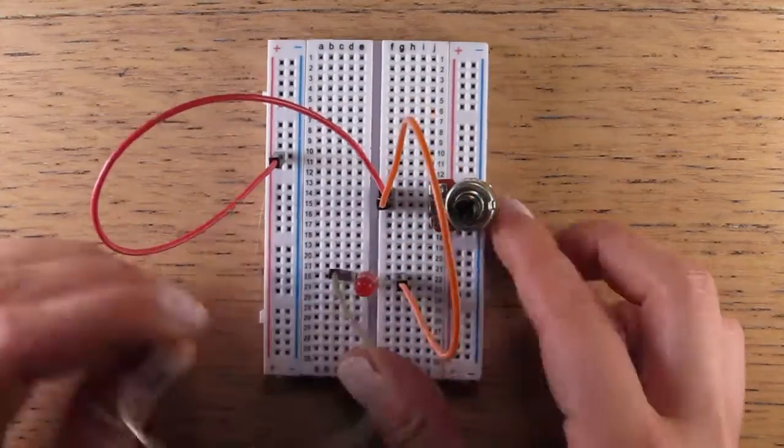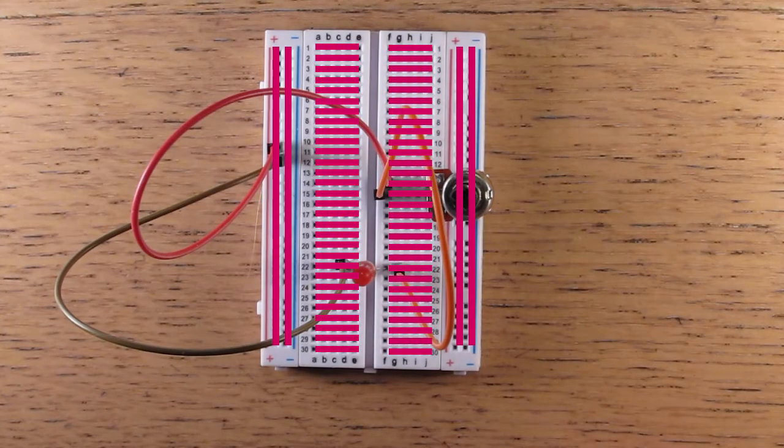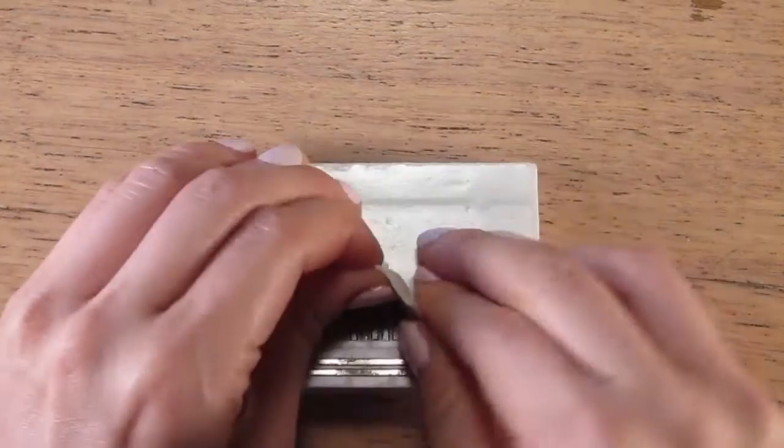Breadboards work like this. The rows on the sides are all connected vertically, and the center left and center right rows are connected horizontally. But this is easier to explain if you can just rip off the back of a breadboard and look at it.